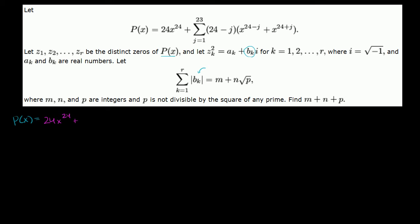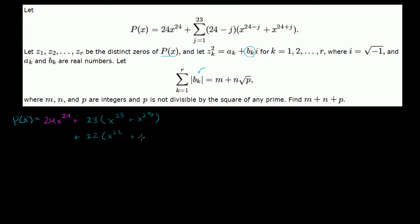So if we set j equal to 1, we get 23 times (x to the 23rd plus x to the 25th). And then when j is equal to 2, we have plus 22 times (x to the 22nd plus x to the 26th).